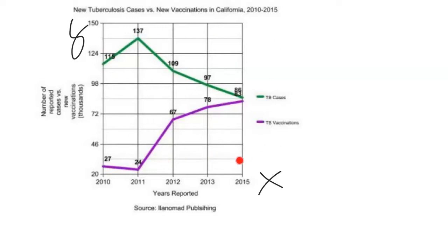Just a cursory view of this chart: as the years go on, TB vaccinations started lower and then went higher. Meanwhile, the green line — TB cases — started higher, went a little bit higher, then ended up down. So we're seeing something happening over time: vaccinations are increasing and cases of TB are decreasing.